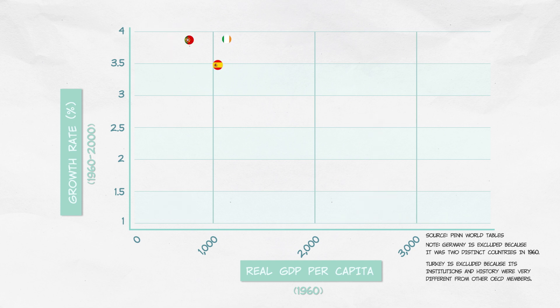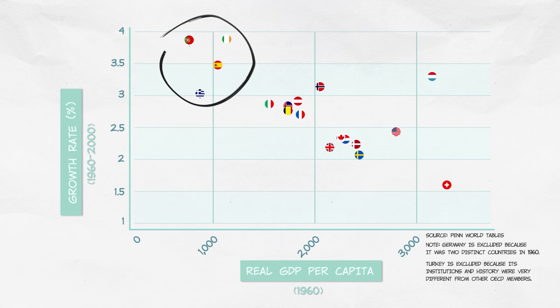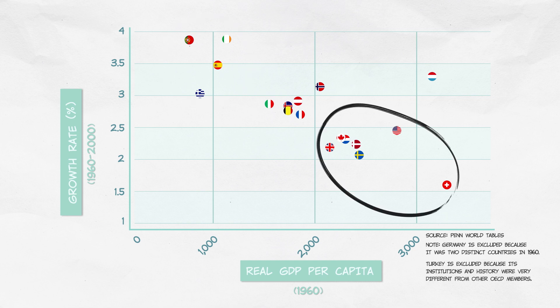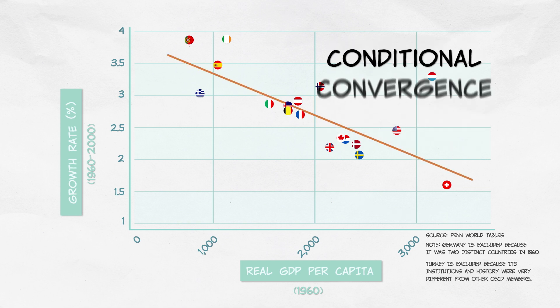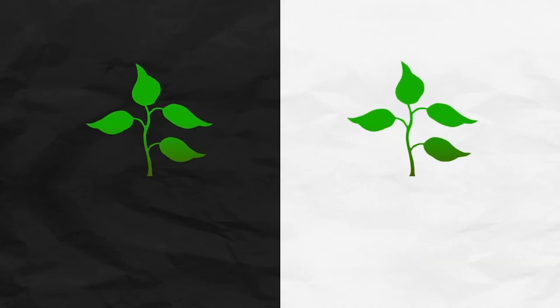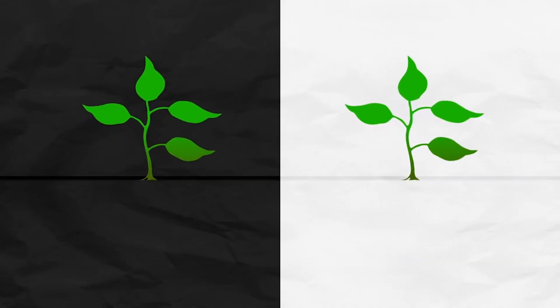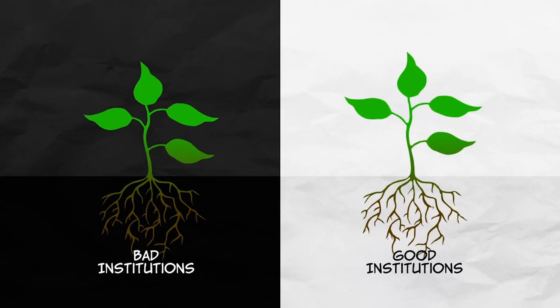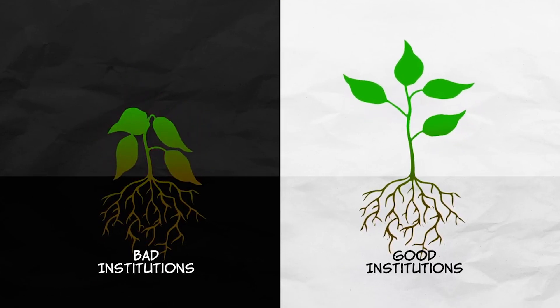And that's exactly what we see. The countries which were relatively poor in 1960 grew faster than the countries which were relatively wealthy in 1960. So among countries with similar institutions, we do see convergence — conditional convergence. The idea of conditional convergence is important because it highlights the role institutions play in economic growth.